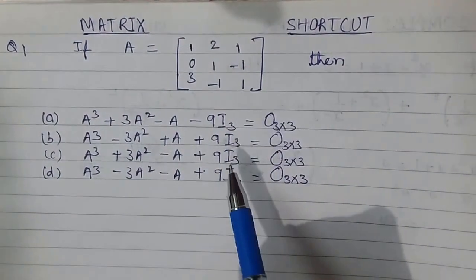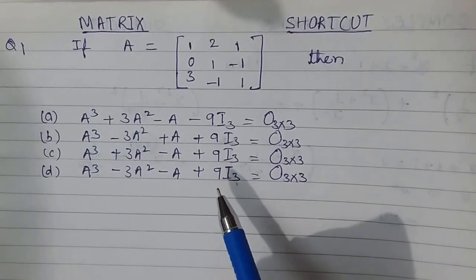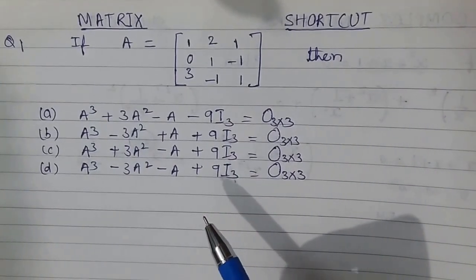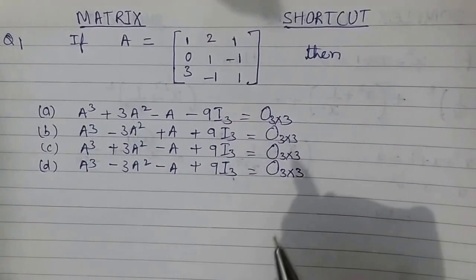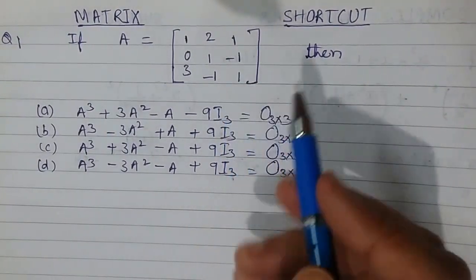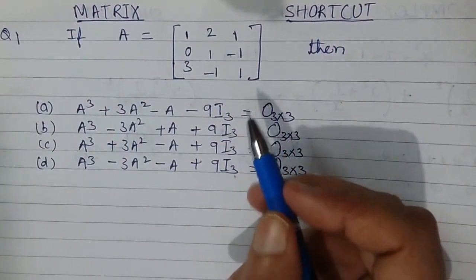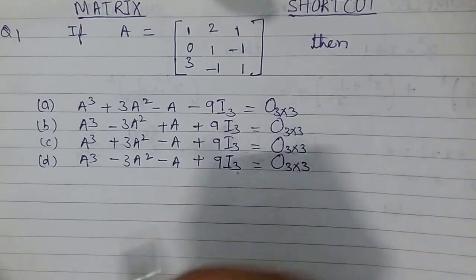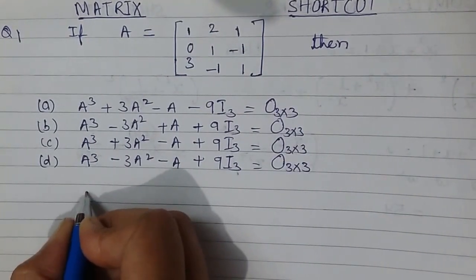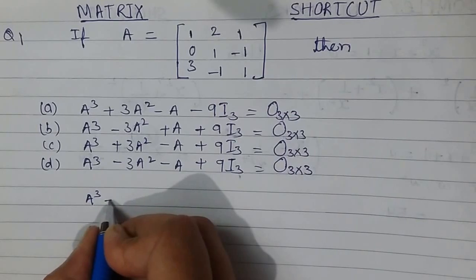For this I am having a trick. My trick is that whenever we are having a 3 by 3 matrix, then the value of that matrix is equal to A³ minus sum of diagonal elements.